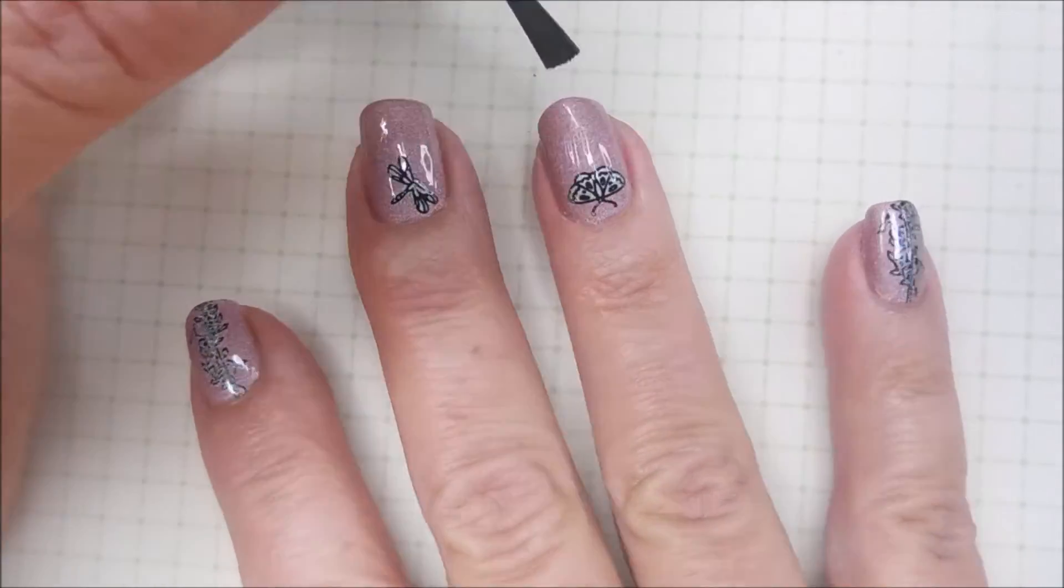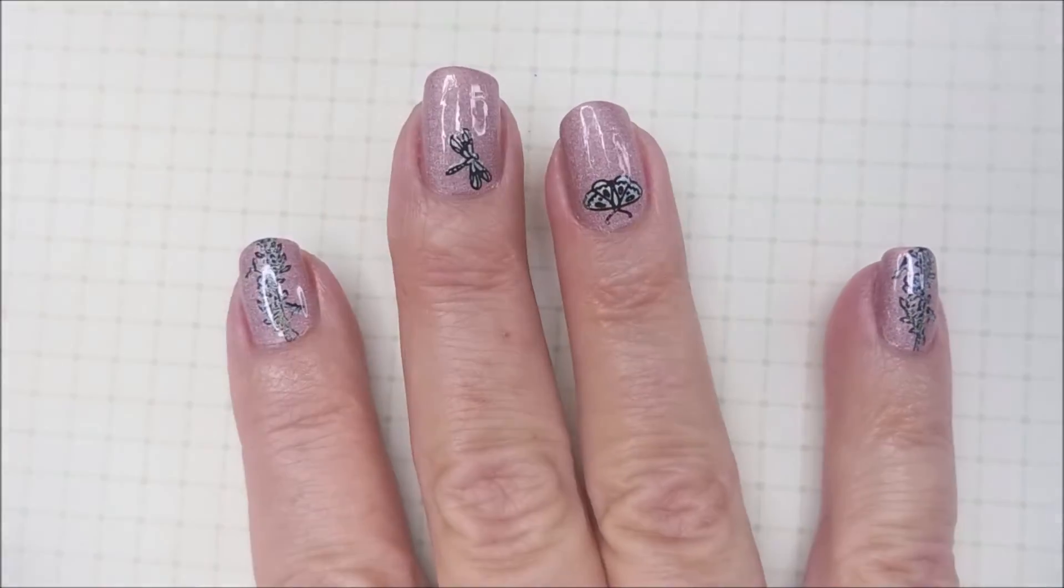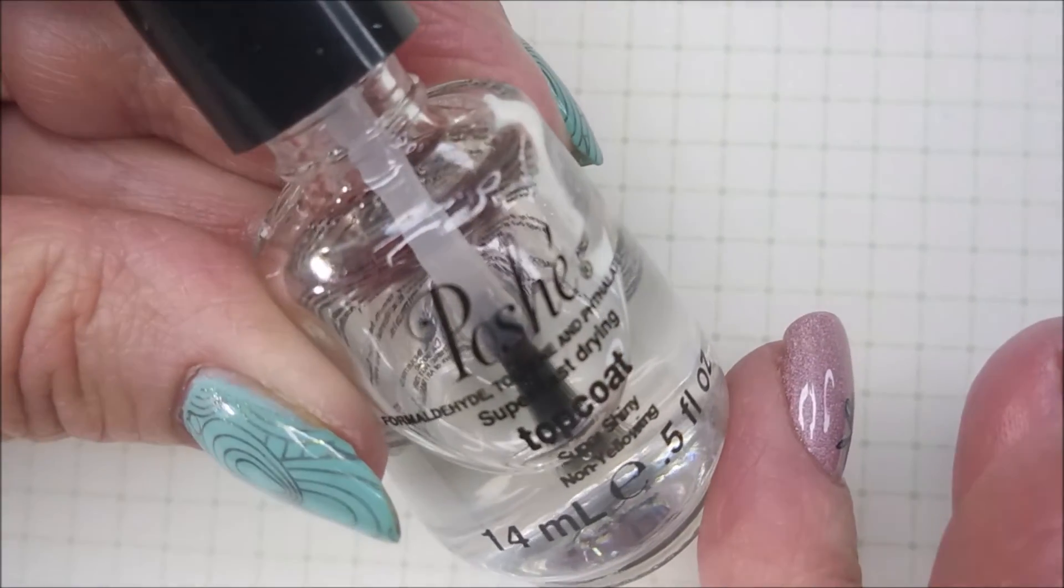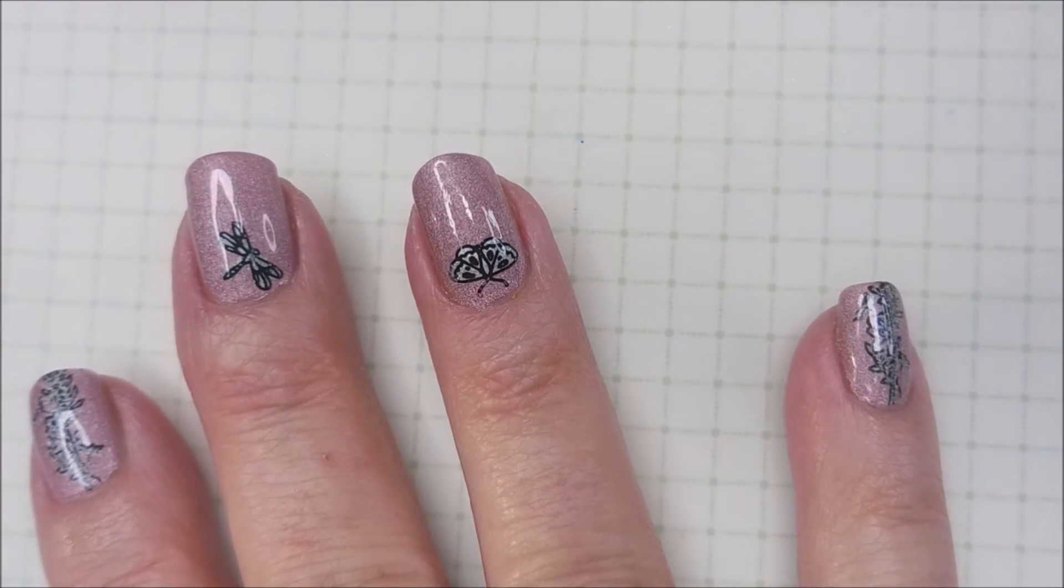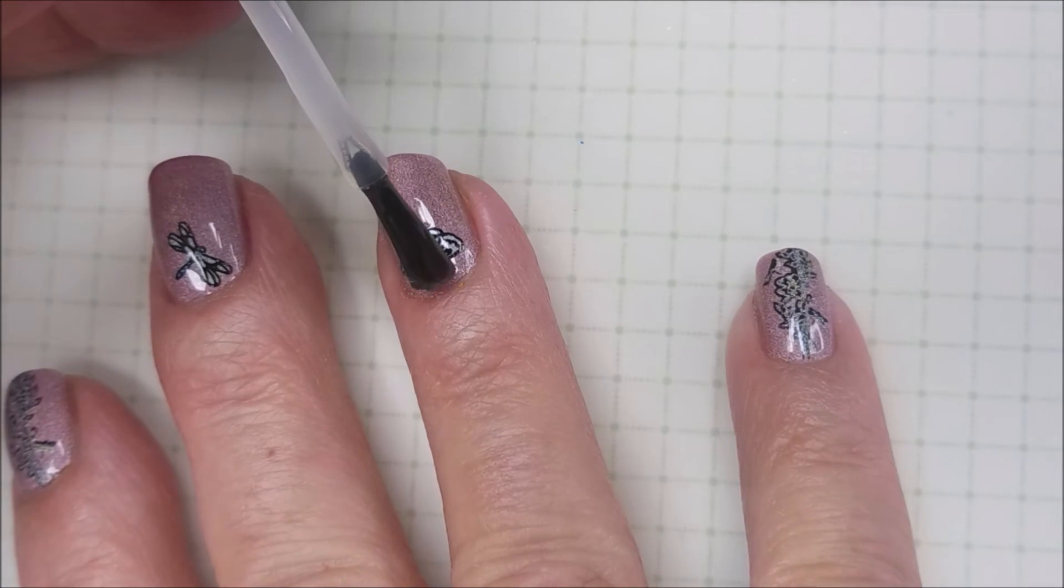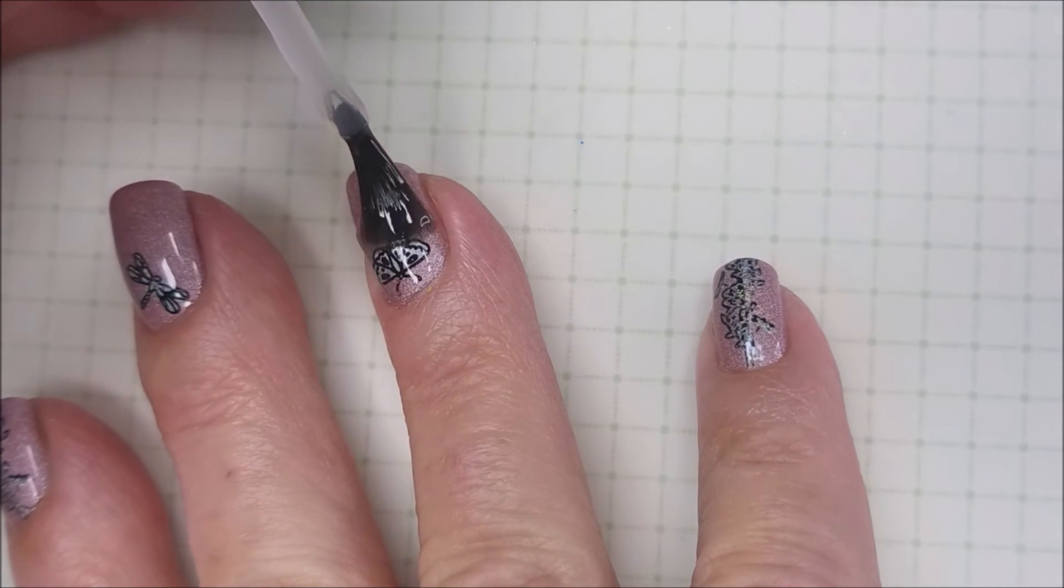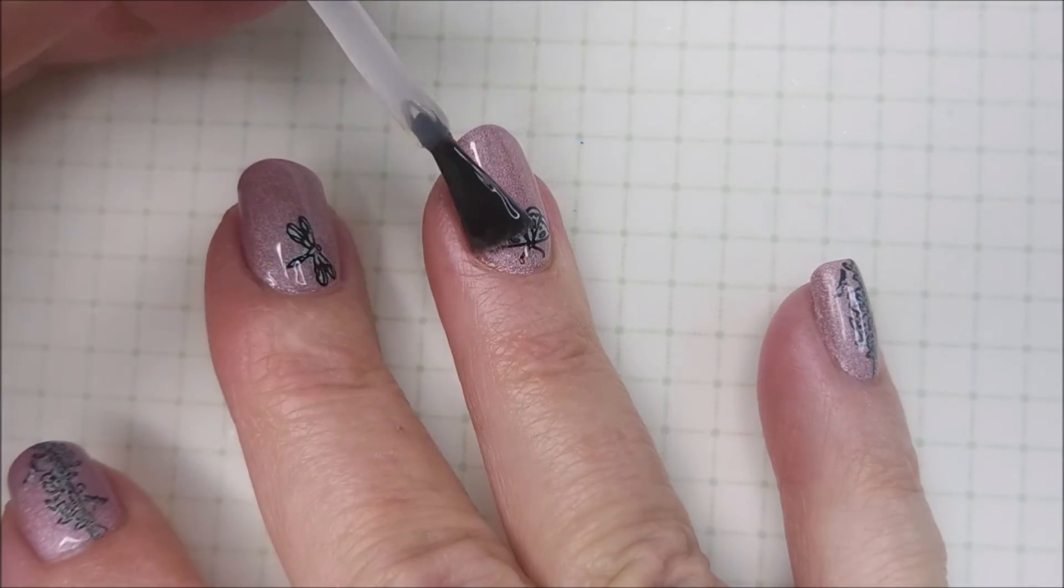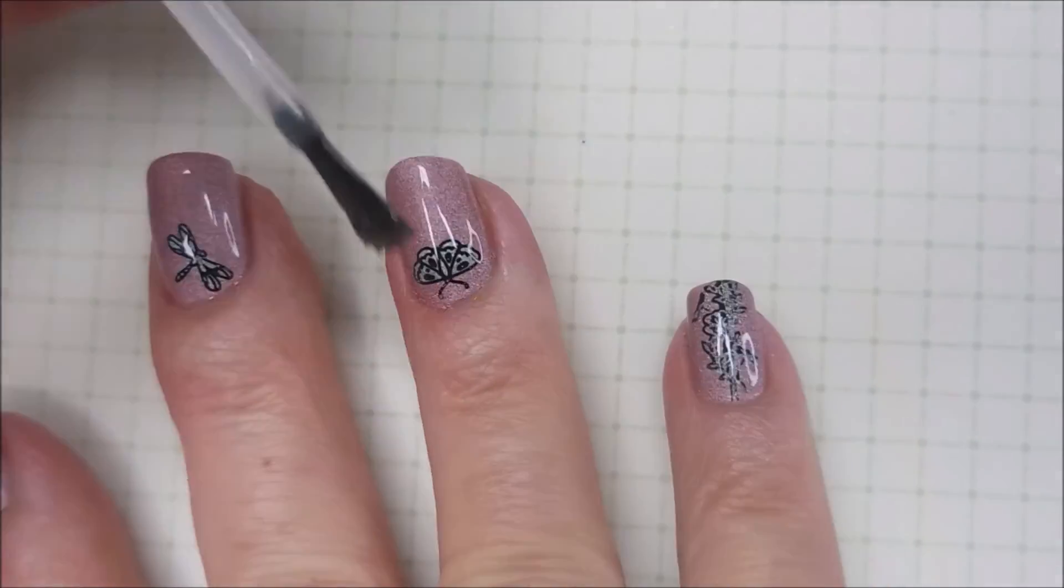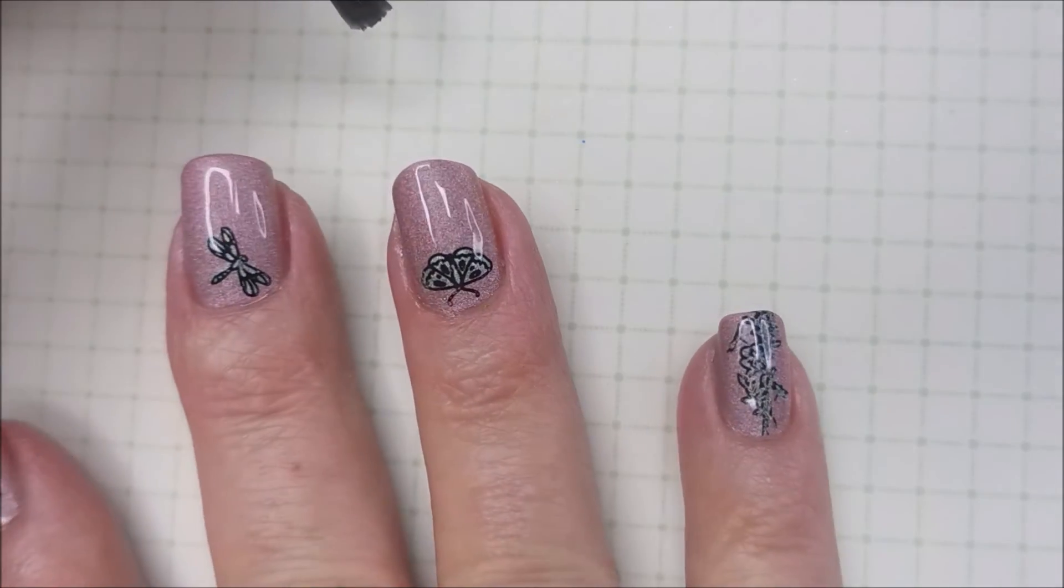So I am going over the images with the Smudge Free Top Coat from Maniology. Just over the decal part. And once that's dry, I'm going over with Posh Top Coat to seal it all in. And to finish off this manicure. There we go. Very nice. I am going to cap my free edge again.